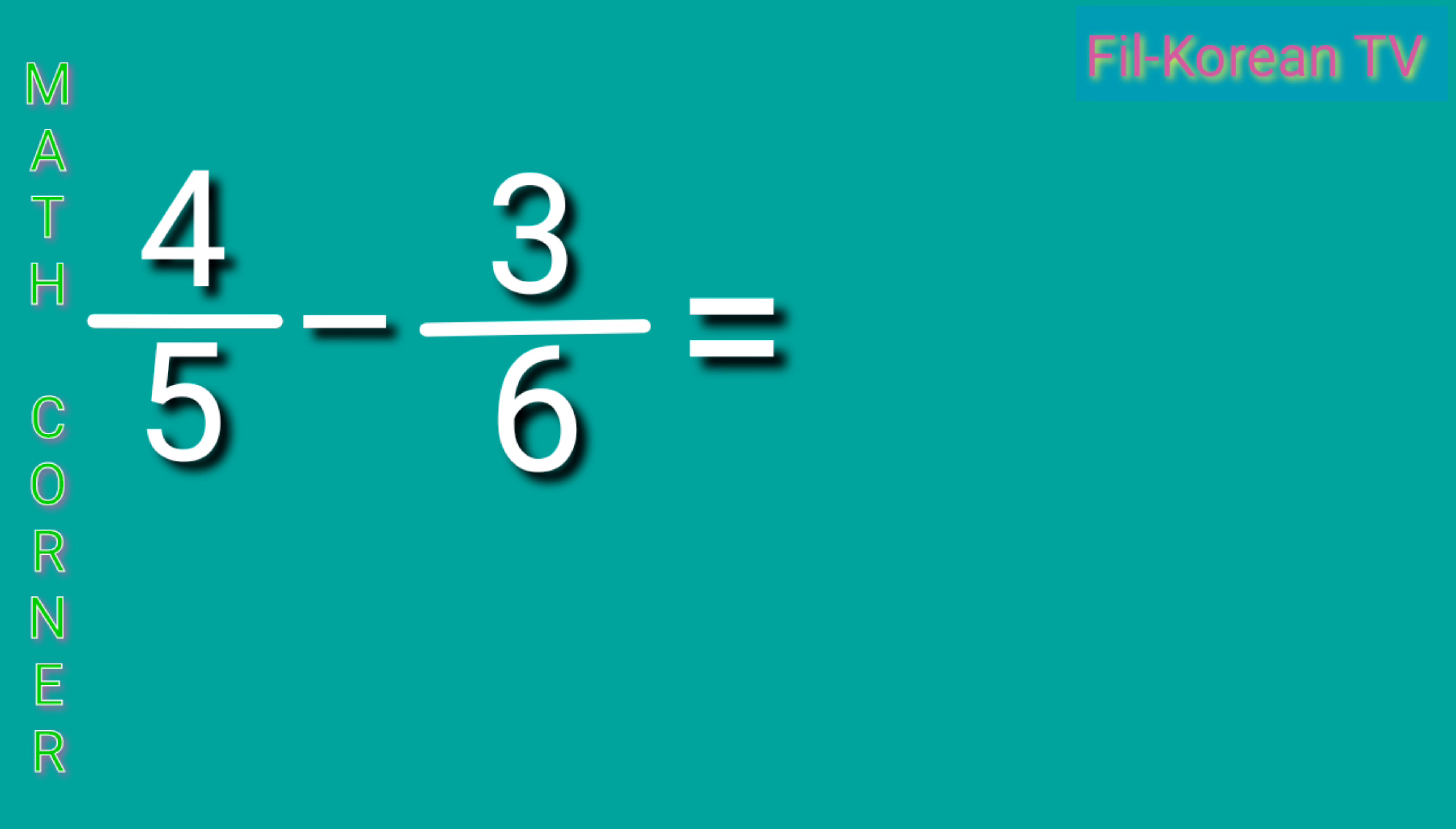To change these fractions to similar fractions, let's get the LCD of 5 and 6. The LCD of 5 and 6 is 30. Next, divide the LCD by the denominators.